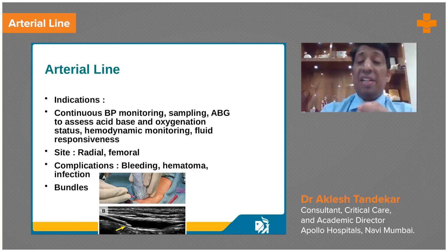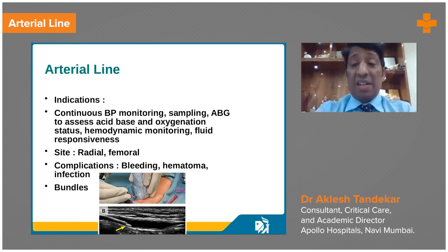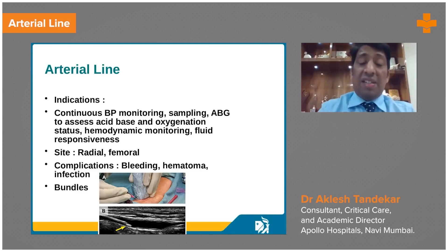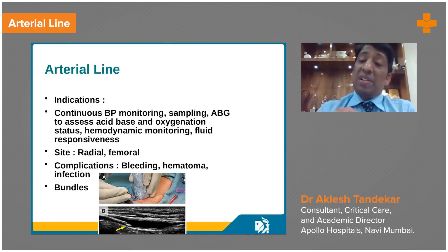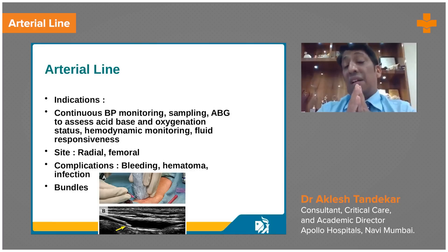The arterial line can be inserted in radial or femoral sites, under all aseptic precautions like the central line — wearing cap, gown, and everything. The site is cleaned with 2.5% chlorhexidine gluconate, and after all aseptic precautions are handled, the arterial line is inserted.